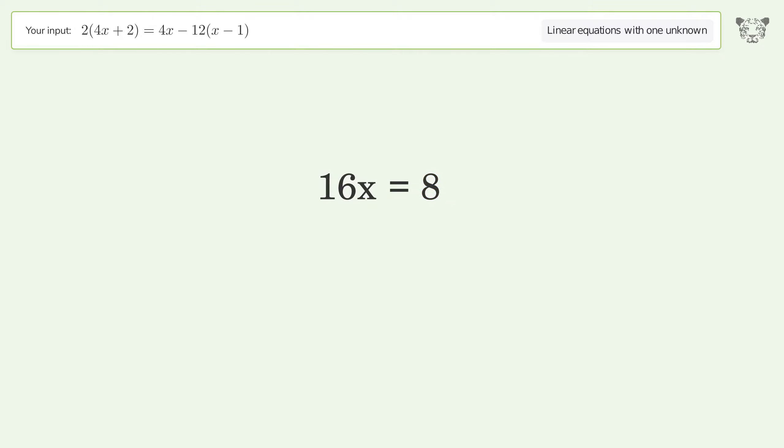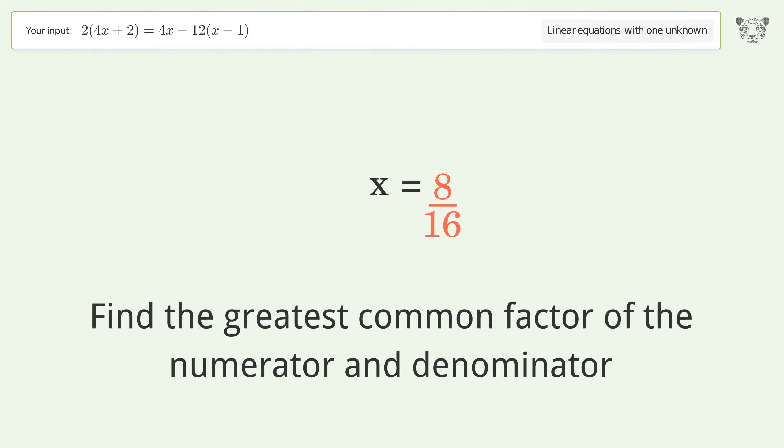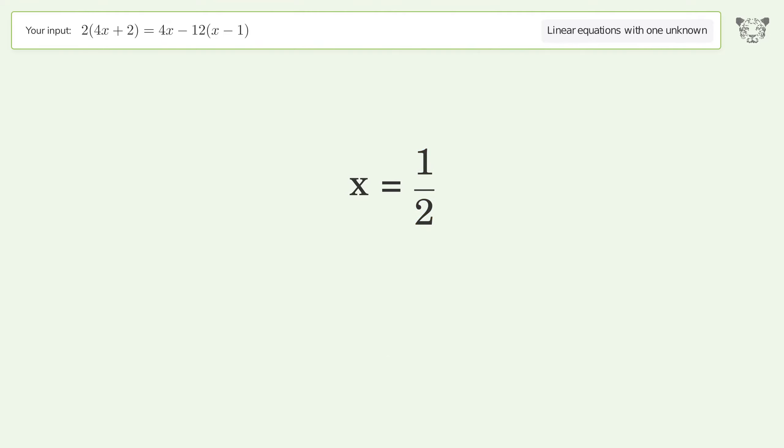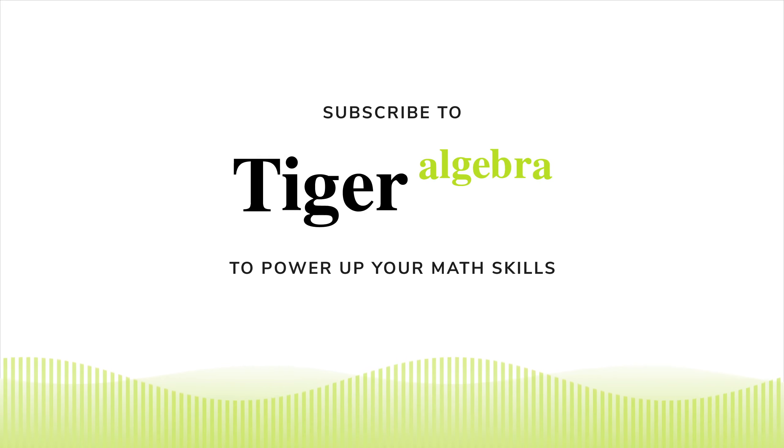Group like terms on the right side of the equation. Group like terms. And so the final result is x equals 1 over 2.